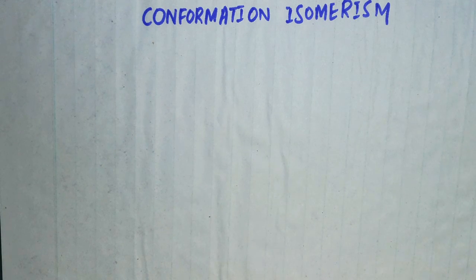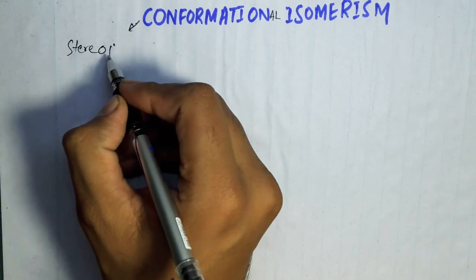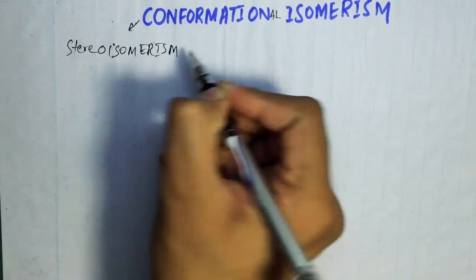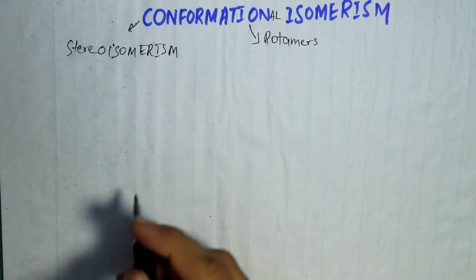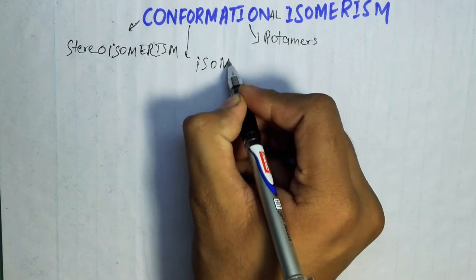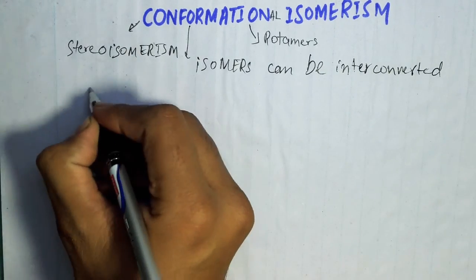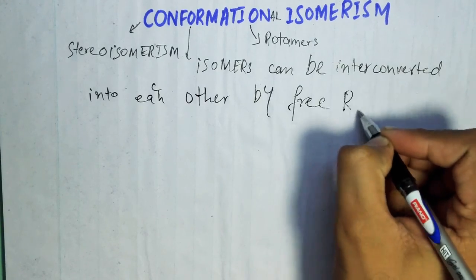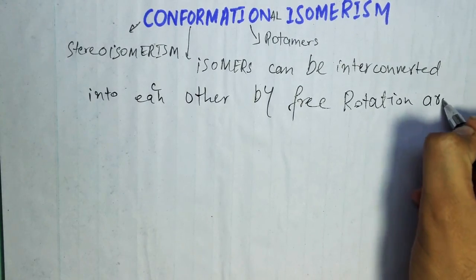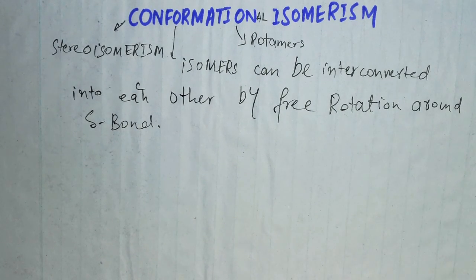I am Ghazanfar and today I will discuss conformational isomerism. Conformational isomerism is a type of stereoisomerism, also known as rotamers. It is a type of stereoisomerism in which isomers can be interconverted into each other by free rotation around sigma bonds. So conformational isomers are also known as rotamers.